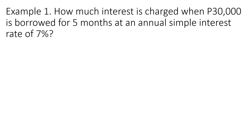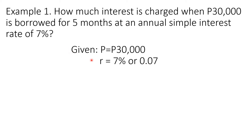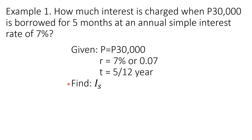Example 1: How much interest is charged when P30,000 is borrowed for 5 months at an annual simple interest rate of 7%? The given in the problem are: the principal amount, which is P30,000; the simple interest rate, which is 7%, or 0.07 in decimal; and the value of T, which is 5 over 12 years, because the given is expressed in number of months. We are asked to solve for the value of I sub S, or the simple interest.